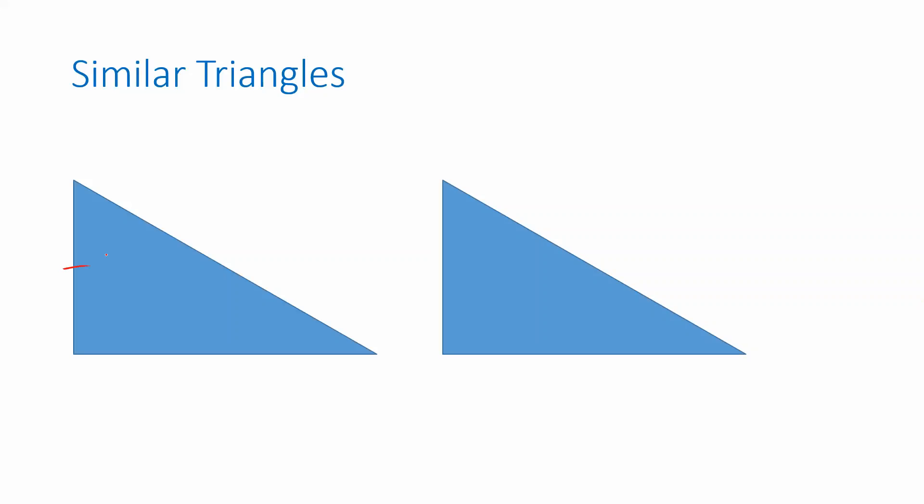For example, this side length is the same as this side length. This side length is the same as this side length. And the other side is also the same length on each. Those would be congruent triangles. We haven't changed any of the sizes.